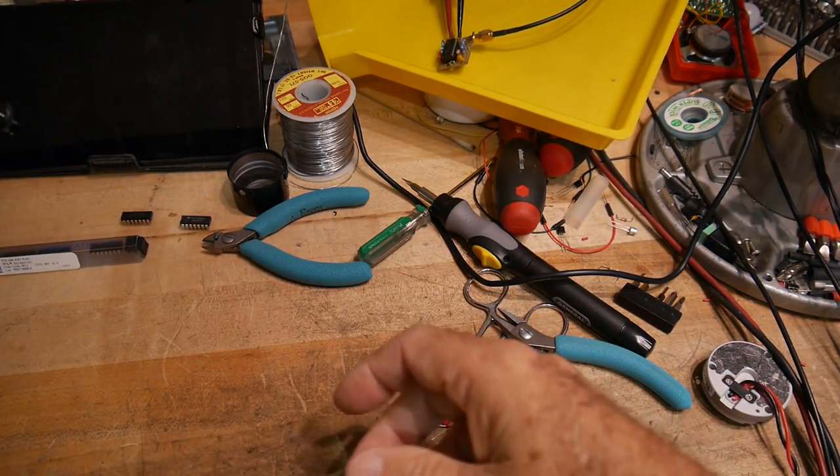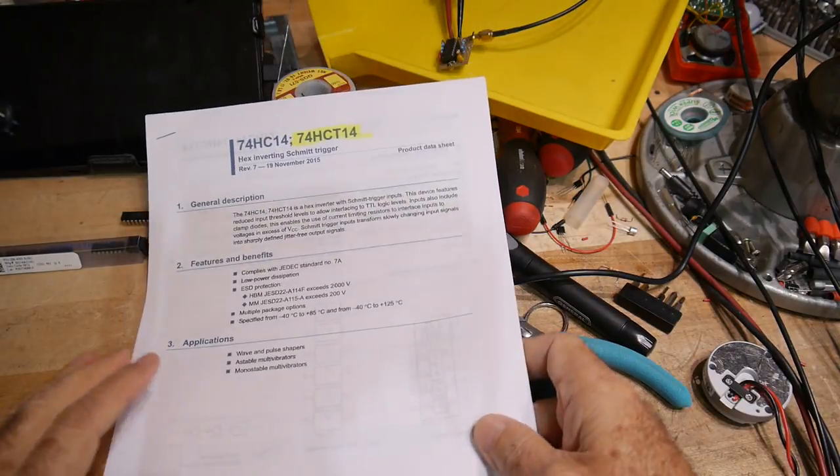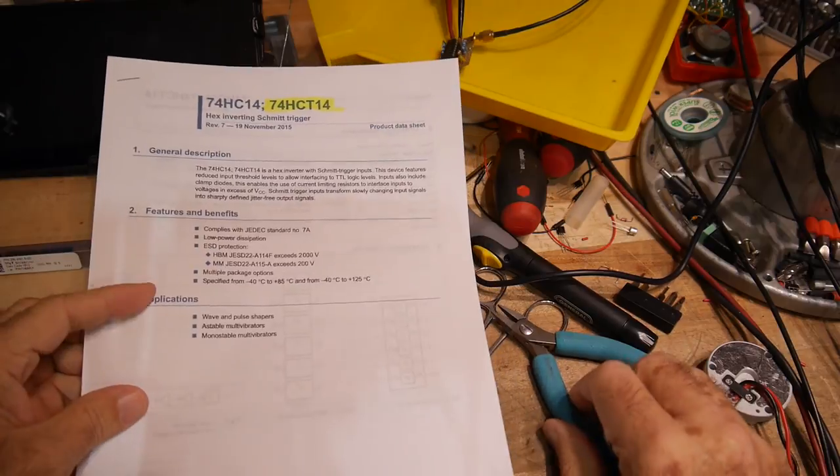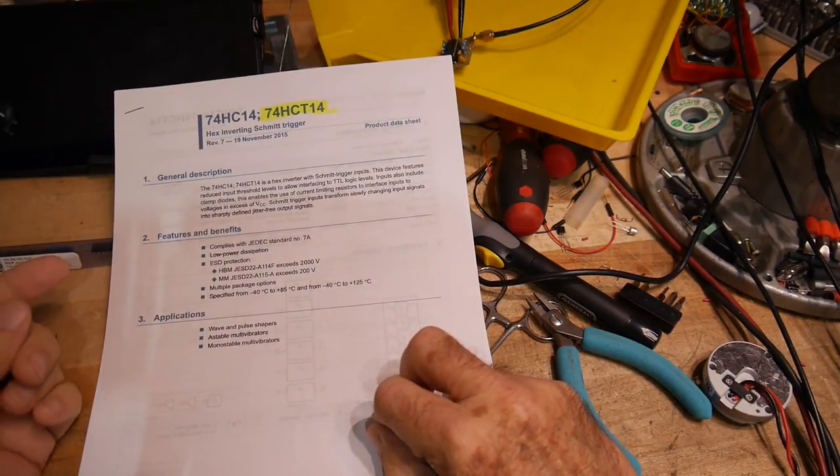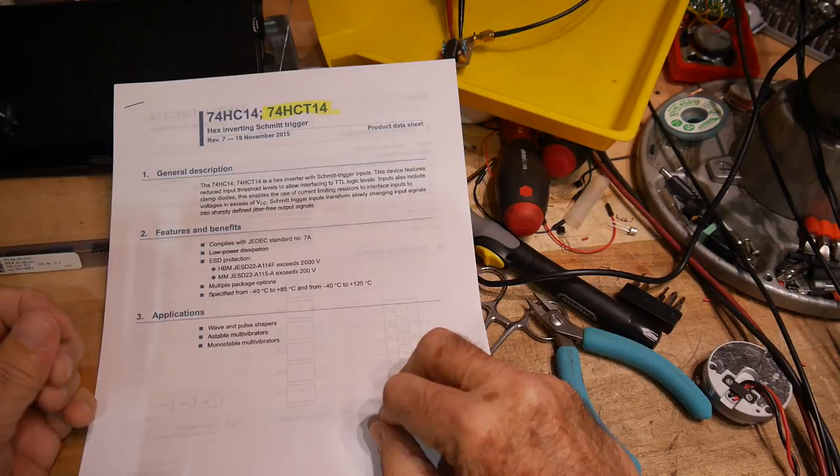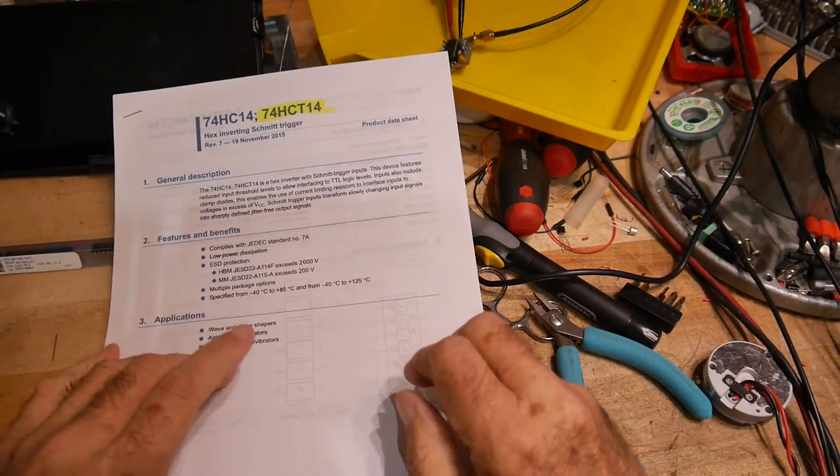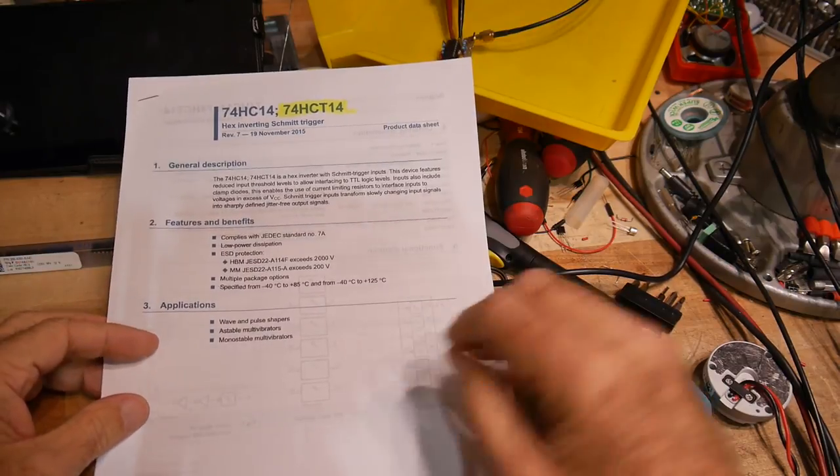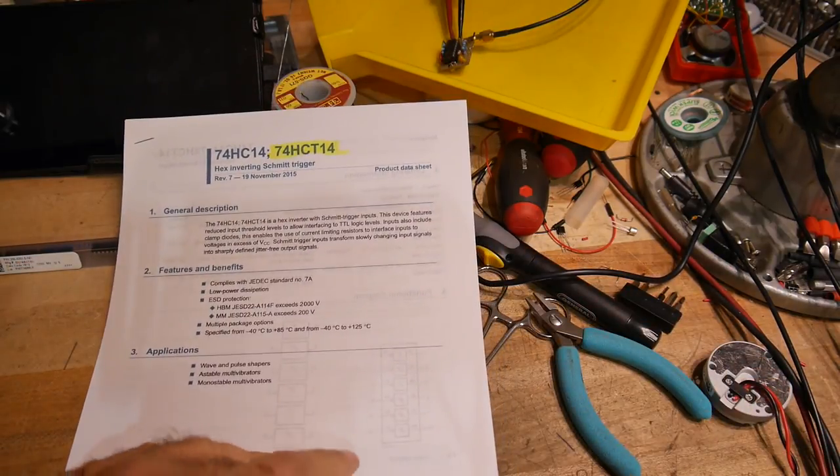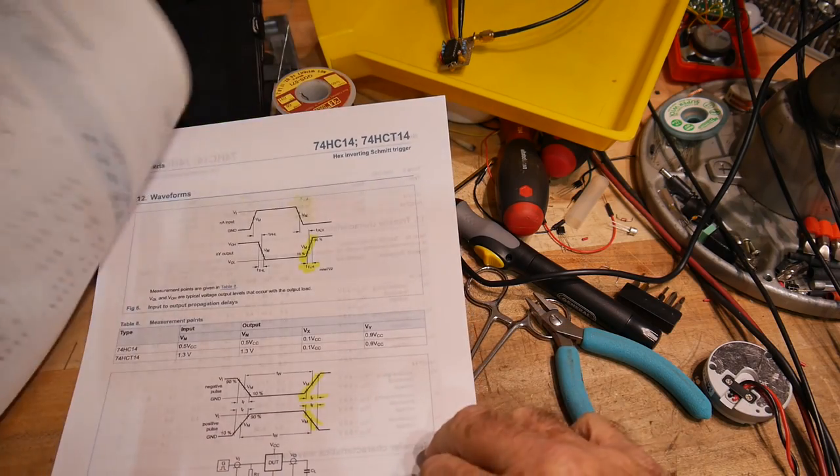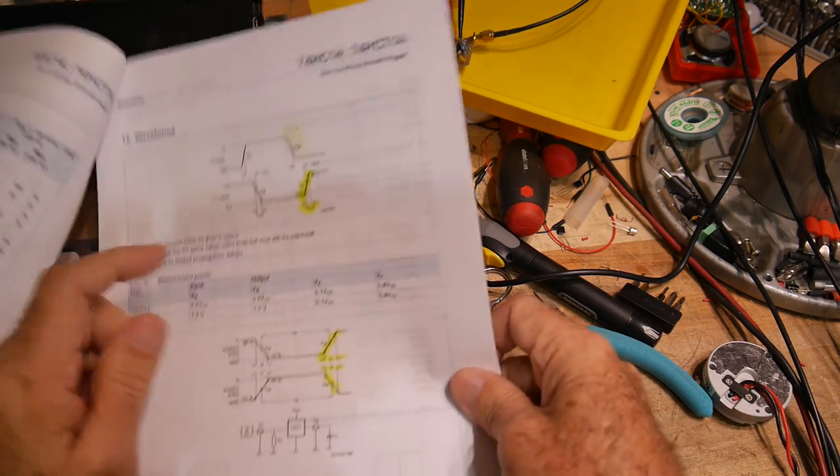And so I said, okay, let's look at some datasheets. Here's a datasheet. Not all the datasheets had rise times in them. You can call it slew rate. You can call it transition time. You can call it rise time. Call it different things. But I couldn't find them in several datasheets for these parts. This one did. This one did have a value.